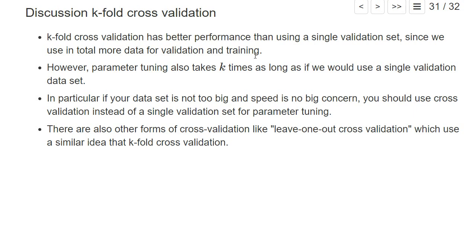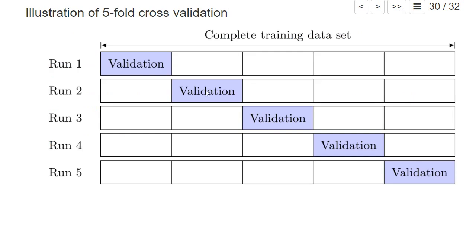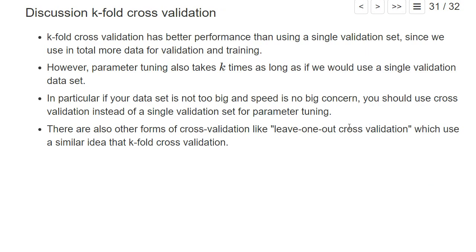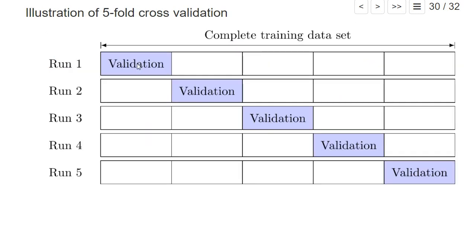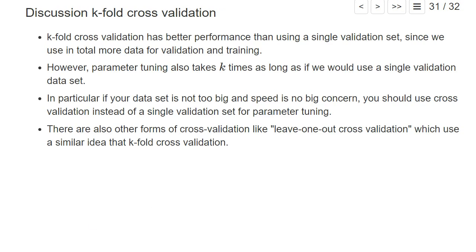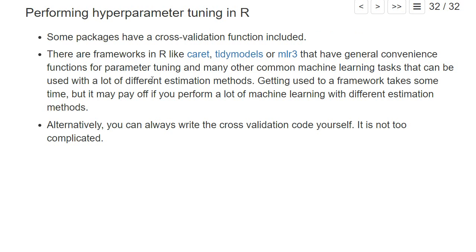If we have large data sets and complicated methods, we may not use k-fold cross validation because our computer could run for three months. However, if the data set is not too big, speed is not such a big concern — and with smaller data sets there's also more random variation with the validation set, so you should definitely use k-fold cross validation. There are also variants like leave-one-out cross validation, where the validation set is only a single observation. If you use cross validation, often five-fold or ten-fold is used, or three-fold if your computer is slow.